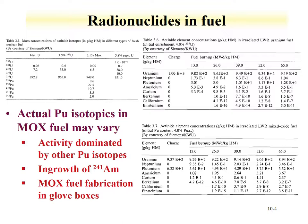Burn-up has an influence on the amount of radionuclides in fuel. The amount of actinides in fuel as a function of burn-up depends on the fuel composition: natural uranium, enriched uranium, or MOX fuel with an initial charge of plutonium. The initial amount of plutonium in the fuel is going to influence the ultimate amount of actinides as a function of burn-up. Particularly for americium, there will be notable ingrowth due to plutonium being present in the MOX fuel.